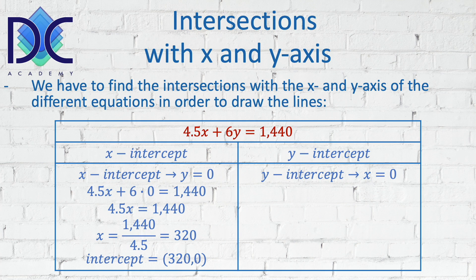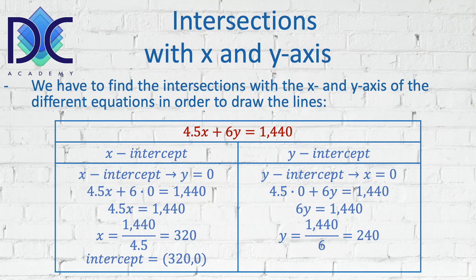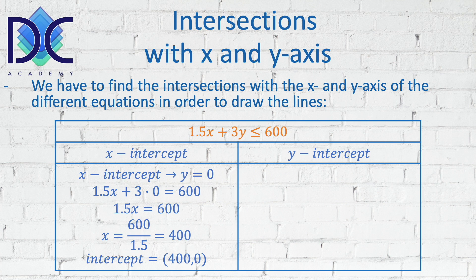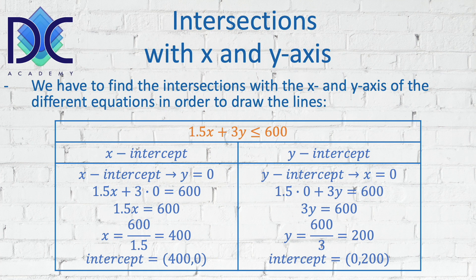For the y-intercept we set x = 0, giving us 4.5(0) + 6y = 1440, so 6y = 1440 and the y-coordinate is 1440 ÷ 6 = 240; the y-intercept is at (0, 240). We do the same for the second equation, 1.5x + 3y ≤ 600. For the x-intercept we find the point (400, 0), and for the y-intercept, setting x = 0, we find the point (0, 200).